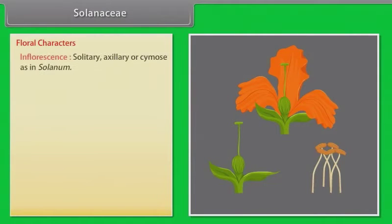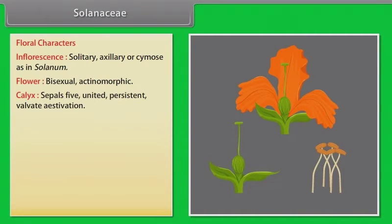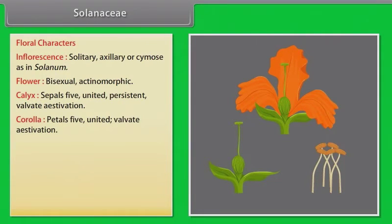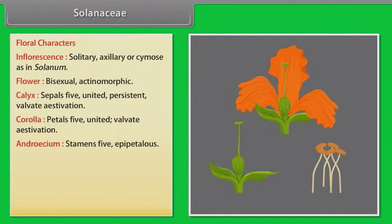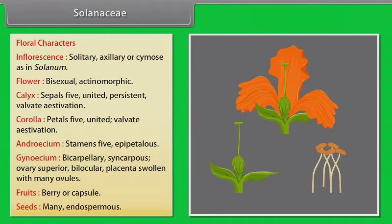Floral characters of Solanaceae: inflorescence solitary axillary or cymose as in Solanum; flower bisexual, actinomorphic; calyx — 5 sepals, united, persistent, valvate aestivation; corolla — 5 petals, united, valvate aestivation; androecium — 5 stamens, epipetalous; gynoecium — bicarpellary, syncarpous, ovary superior, bilocular, placenta swollen with many ovules. Fruits: berry or capsule. Seeds: many, endospermic.